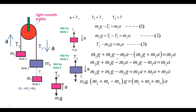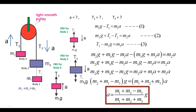Collecting all g-terms on the left and all a-terms on the right: (m1 plus m2 minus m3)·g equals (m1 plus m2 plus m3)·a. Therefore, acceleration a equals (m1 plus m2 minus m3) divided by (m1 plus m2 plus m3), multiplied by g. We have found the acceleration.